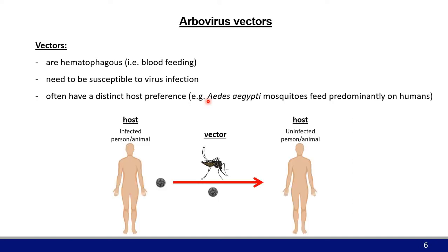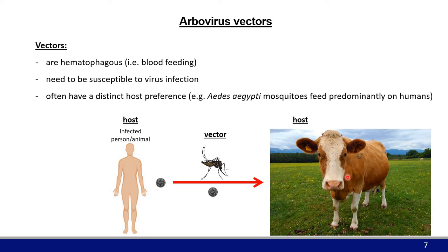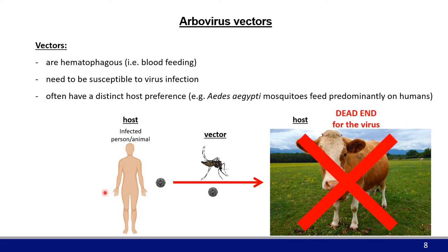For example, Aedes aegypti mosquitoes are very efficient vectors for viruses such as Zika and Dengue because they love to feed on humans, and these viruses replicate well in humans. If a mosquito has no specific host preference, it may feed on an infected human and then next feed on a cow — and a cow does not get infected with Zika. So a mosquito that feeds sometimes on a human, sometimes on a cow, sometimes on a bird is not as efficient a vector for specific arboviruses.